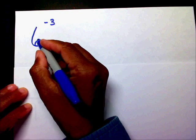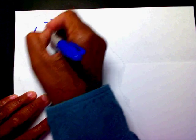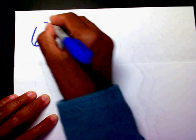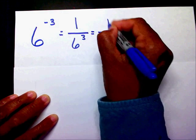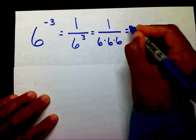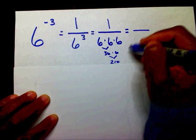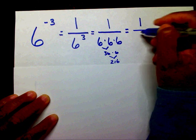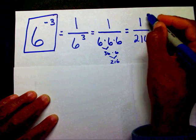We have 6 to the negative 3rd power. Immediately I see a negative exponent, so I need to think fraction. I'm going to put a 1 on top, and I'm going to put this entire power in the denominator without the negative. I know that 6 to the 3rd power means 6 times 6 times 6. 6 times 6 is 36, times 6 gives you 216. So our answer is 1 over 216 — 6 to the negative 3rd equals 1 over 216.